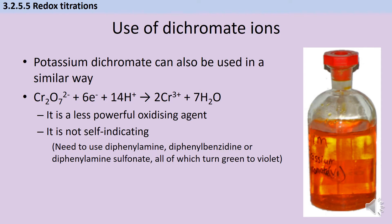It's worth knowing that instead of potassium permanganate, it's possible to do a redox titration with potassium dichromate. This isn't mentioned in the AQA specification anymore, but there are practice questions that reference it, so it's good to be aware of. Potassium dichromate works in the same way as potassium permanganate, but it's not quite as powerful an oxidizing agent, so it won't work for every titration. It's also not self-indicating — you'll need to add one of three indicators that turn from green to violet.